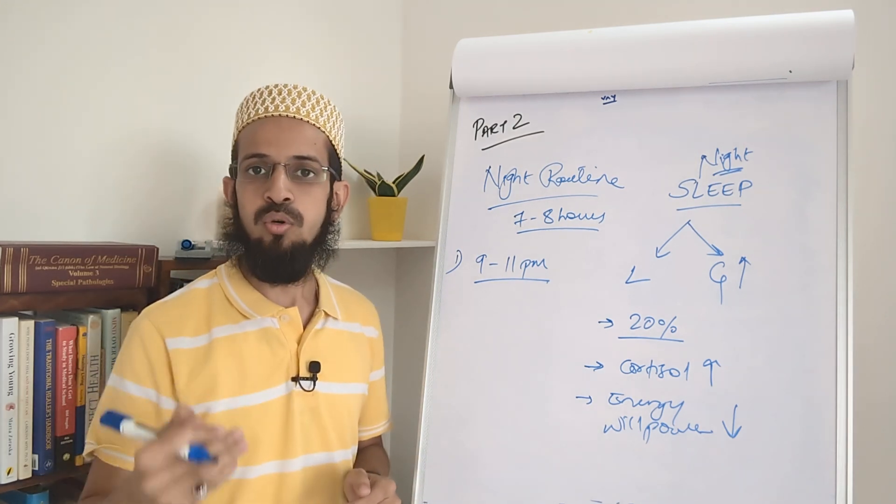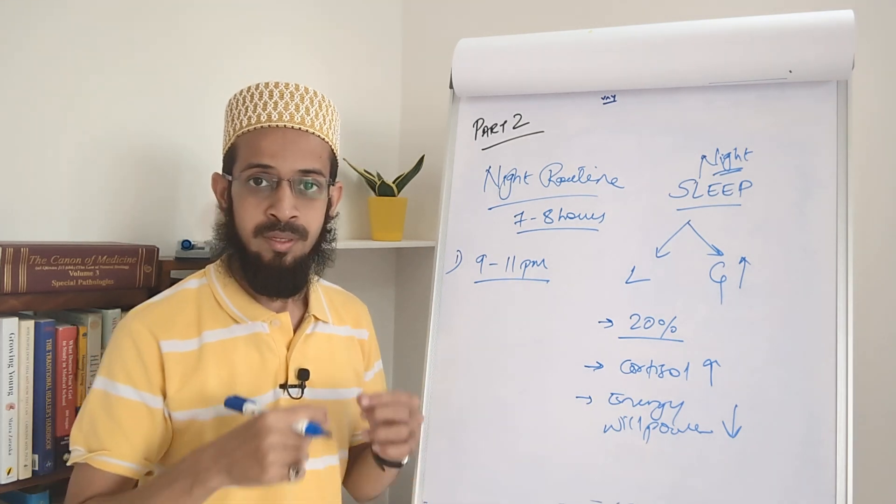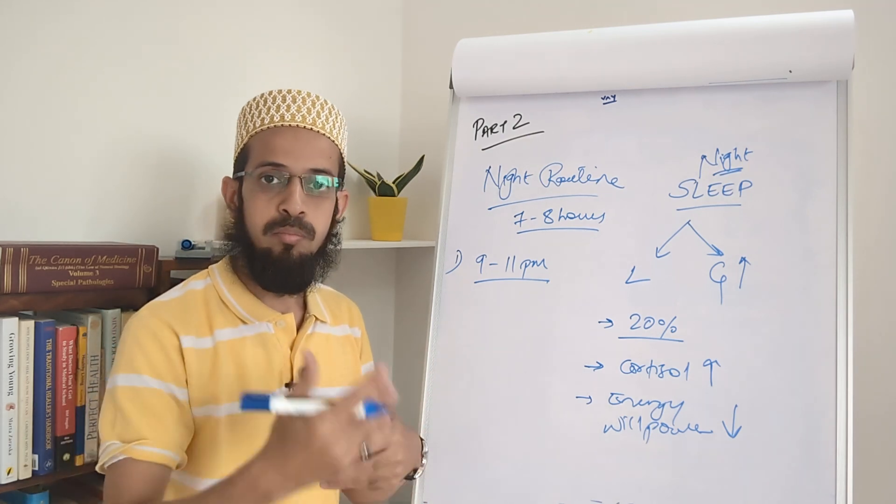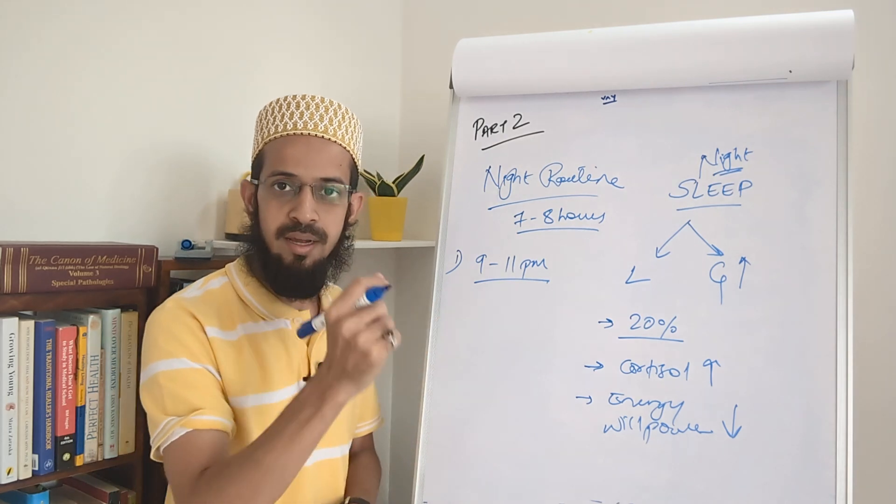12 a.m., 1 a.m., 2 a.m. - 12 a.m. is midnight, 2 a.m. is early morning. That is not the time to sleep. When sun sets, you have to prepare your body for sleep. So 9 to 11 is the ideal time to sleep.